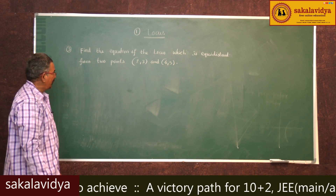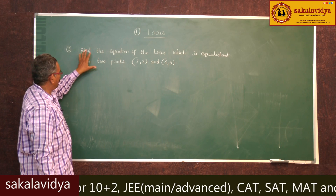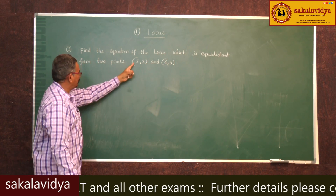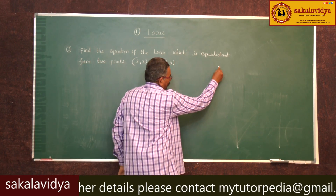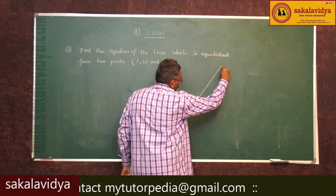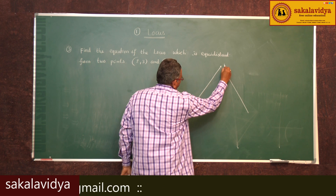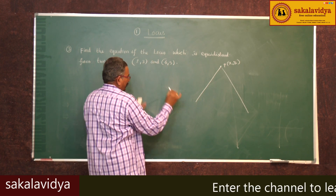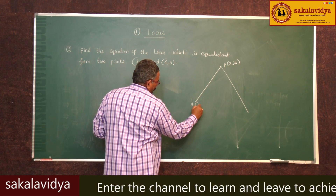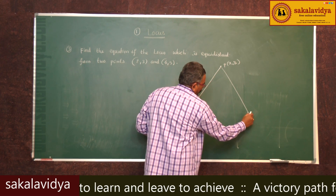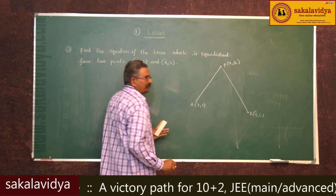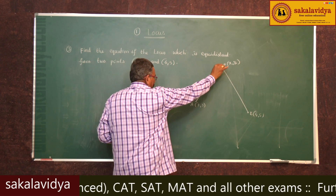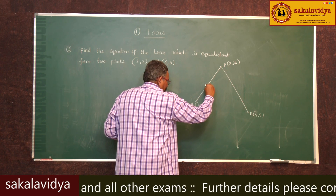Let us find out this problem. We have to find the equation of the locus which is equidistant from these two points. Let us draw a figure. Suppose P(x1, y1) is any point on the locus. Given two points: A(2, 3) and B(4, 5). Equidistant means the distance from P to A is the same as the distance from P to B. That means PA equals PB.